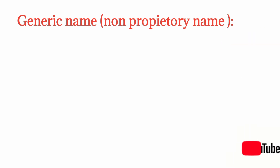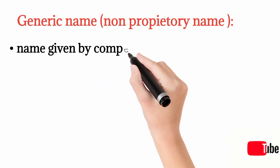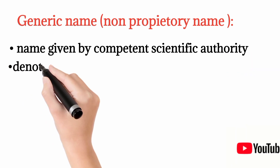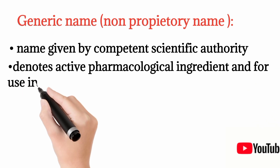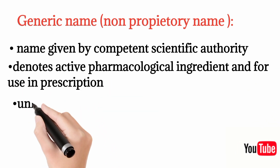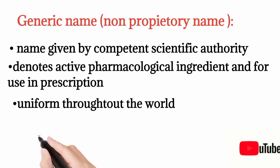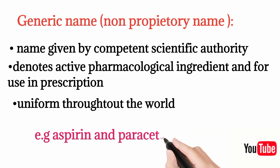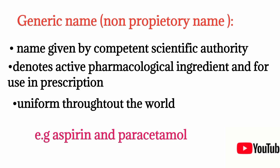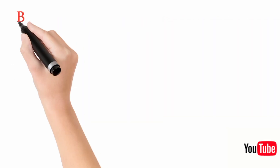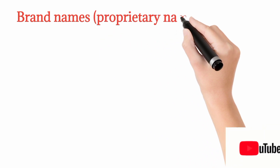Next, we have generic names, also known as non-proprietary names. Generic names are given by a competent scientific authority. They are relatively easier names, they denote the active pharmacological ingredient, and they can be used in prescriptions. Importantly, they are uniform throughout the world. For example, aspirin and paracetamol are generic names.